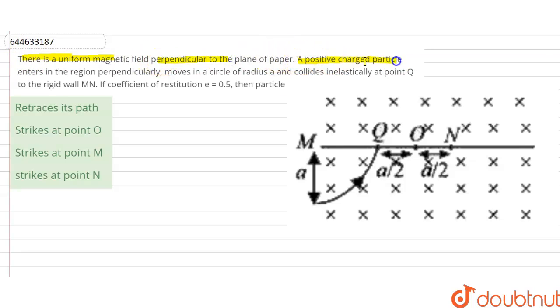A positive charged particle enters in the region perpendicularly, moves in a circle of radius A and collides inelastically at point Q to the rigid wall MN. If coefficient of restitution is 0.5 then particle: